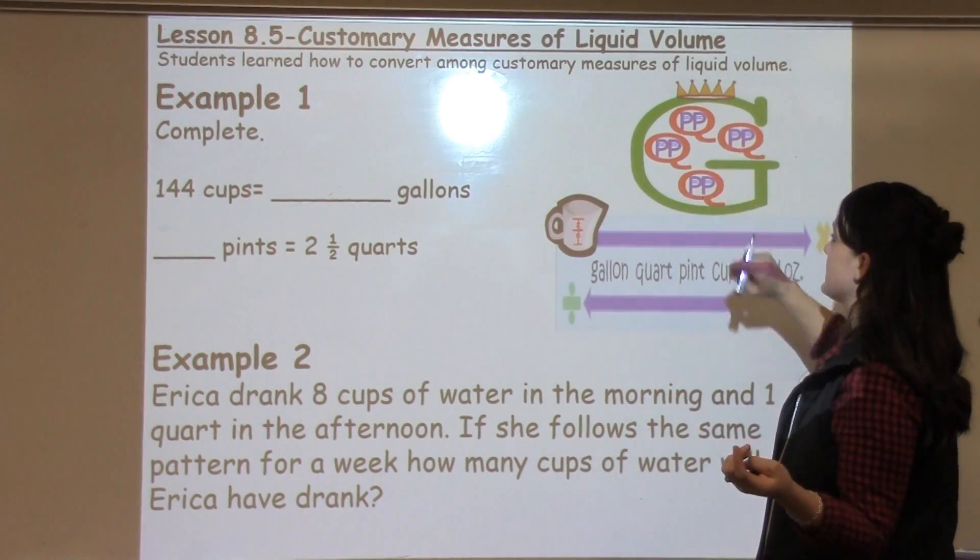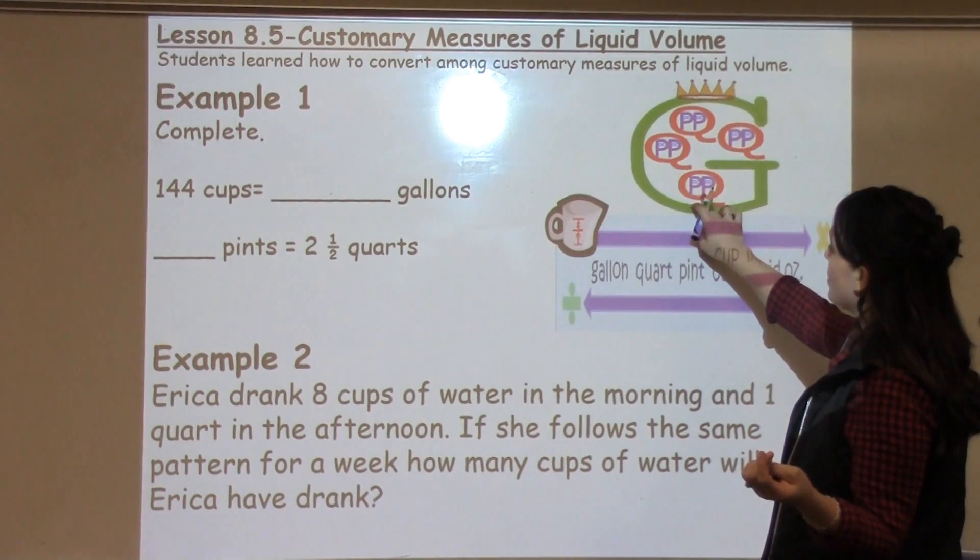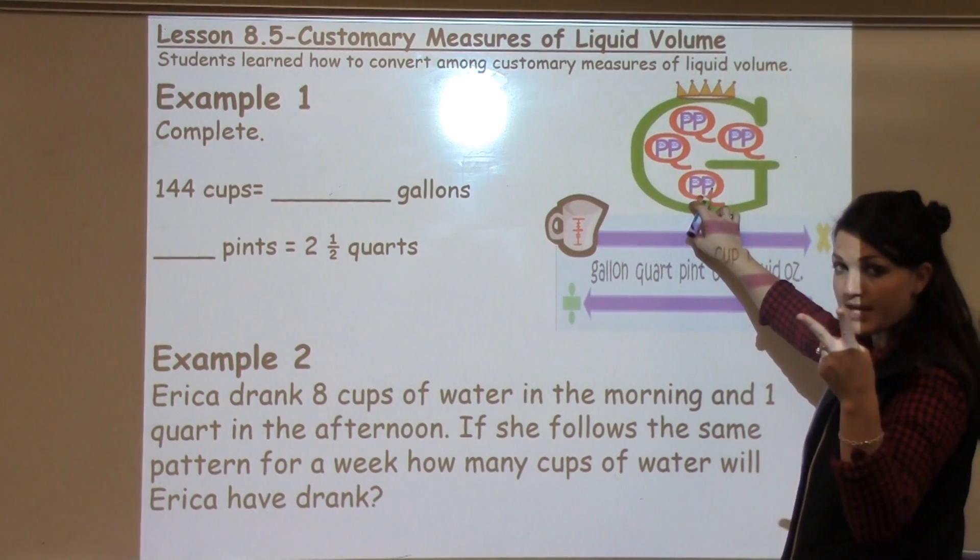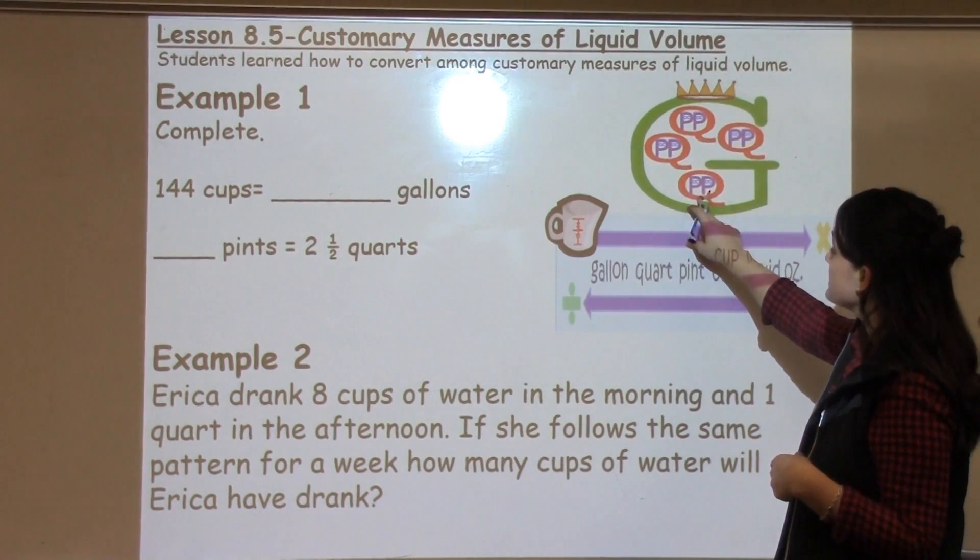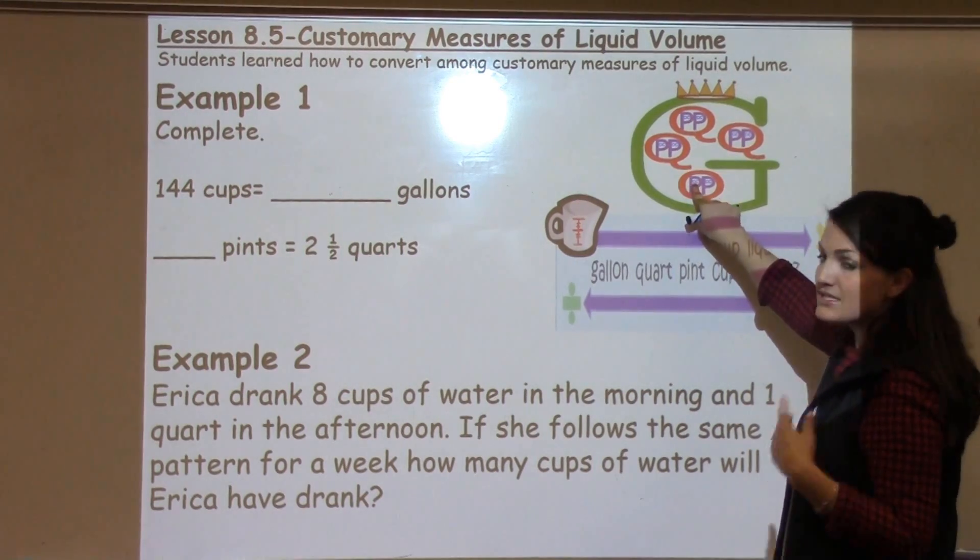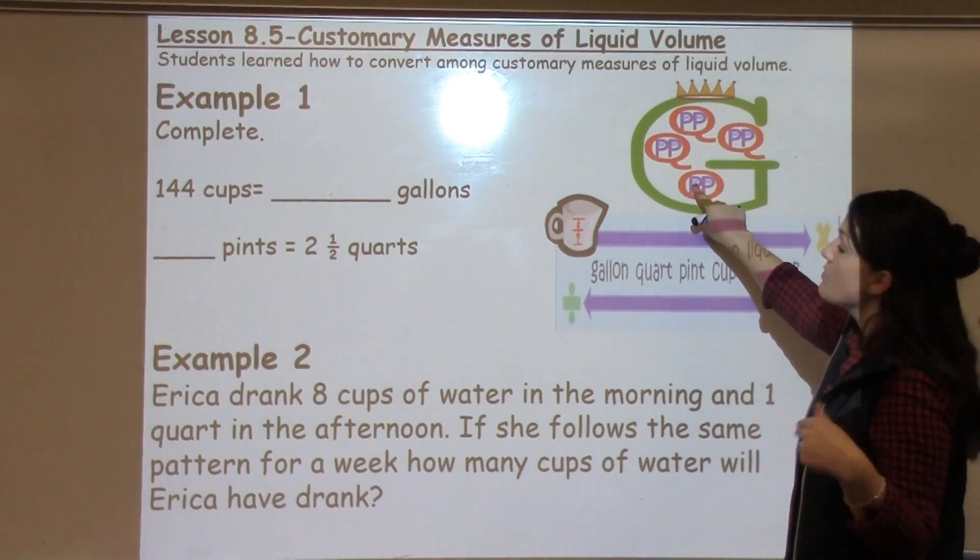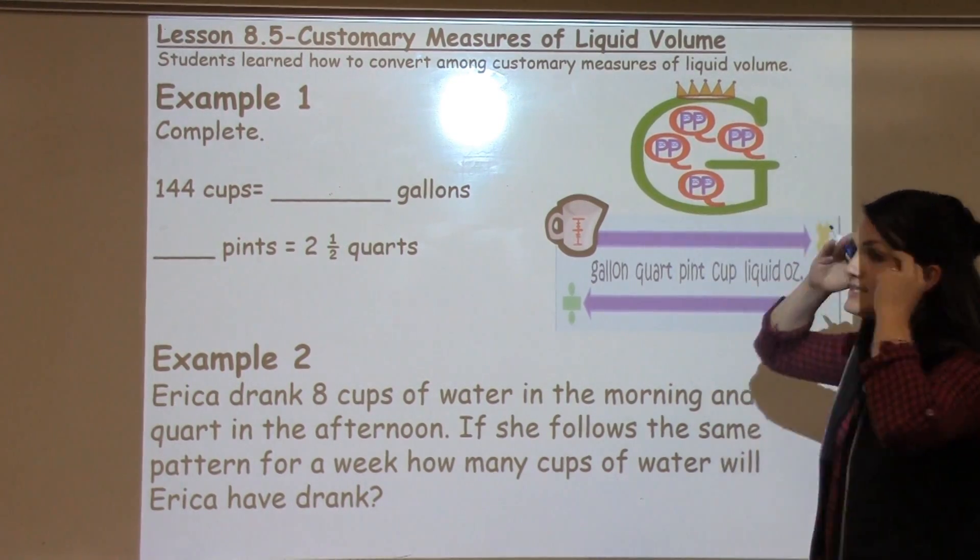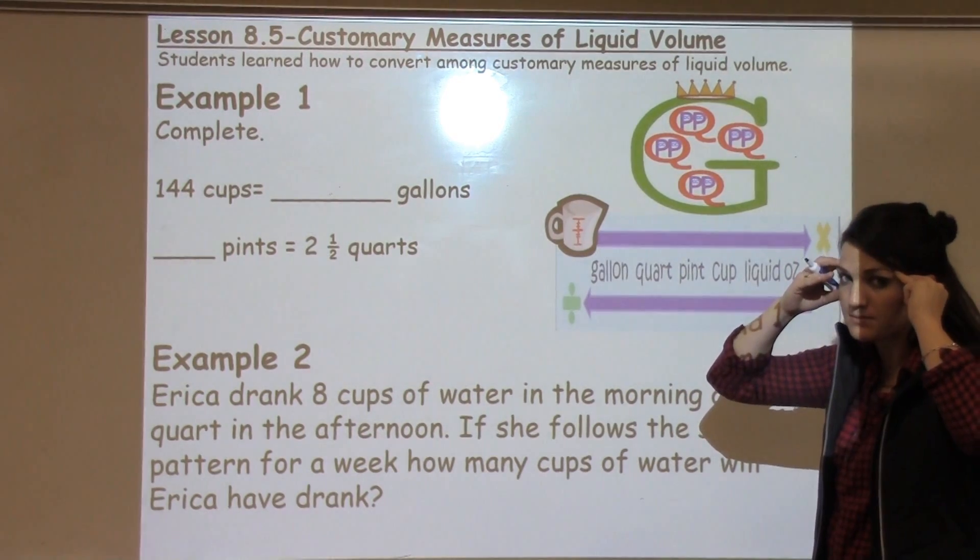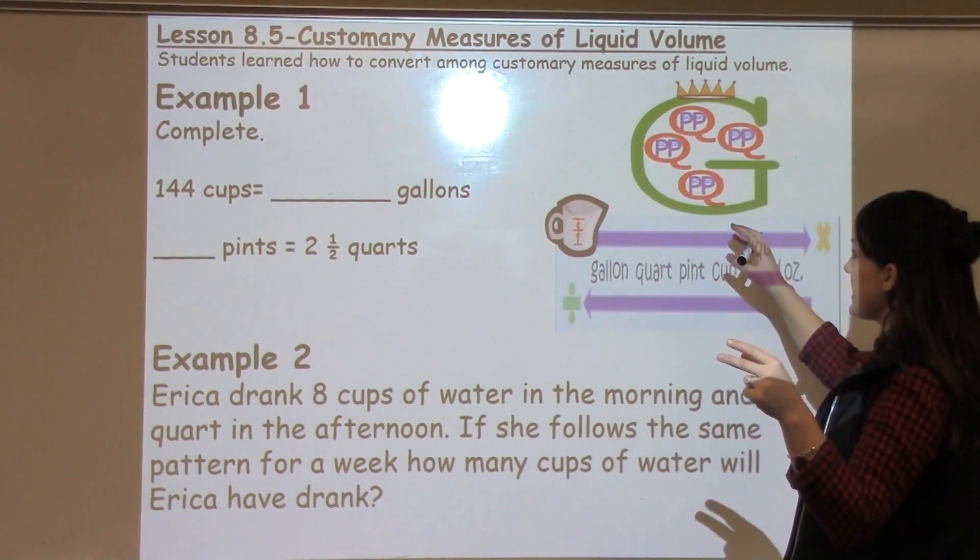And inside the Big G there are four Q's, which stand for quarts, which shows me that there are four quarts in a gallon. Inside each quart there are two letter P's that stand for pints. And then inside each pint is two letter C's, which stand for two cups.